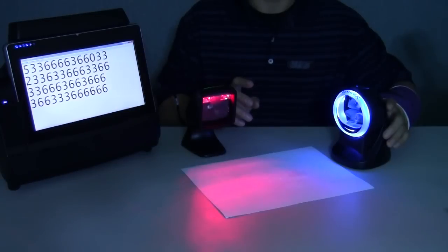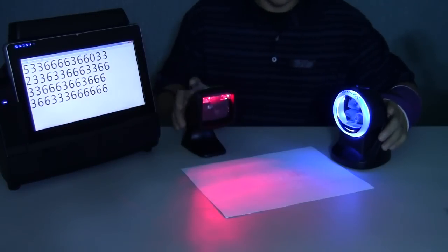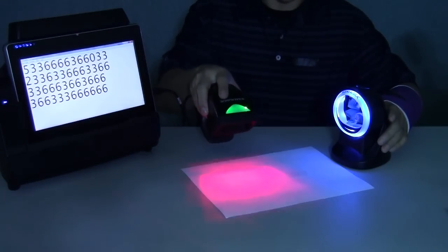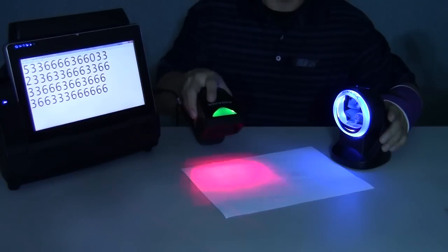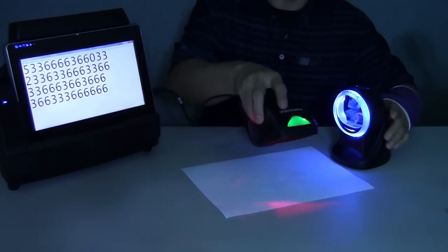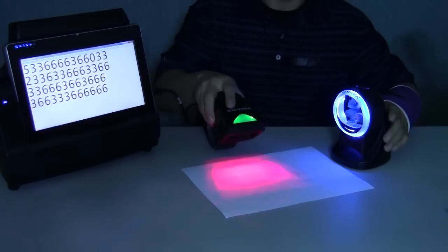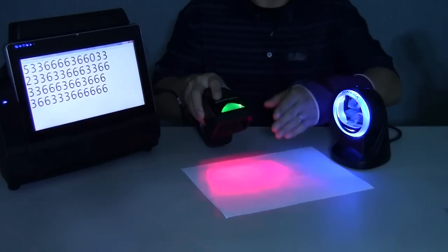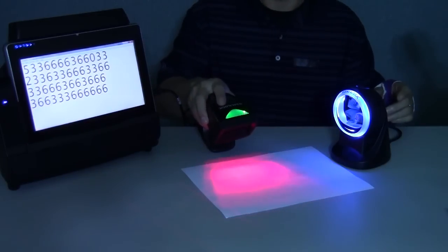I'm going to dim the lights here and show you the different scan patterns. The dominant red light that you're seeing here is the 800i. It's LEDs and it's imaging so it works kind of like a flashlight. You see a big block of red light. Anywhere you put the barcode in the red light is where it's going to try and scan.